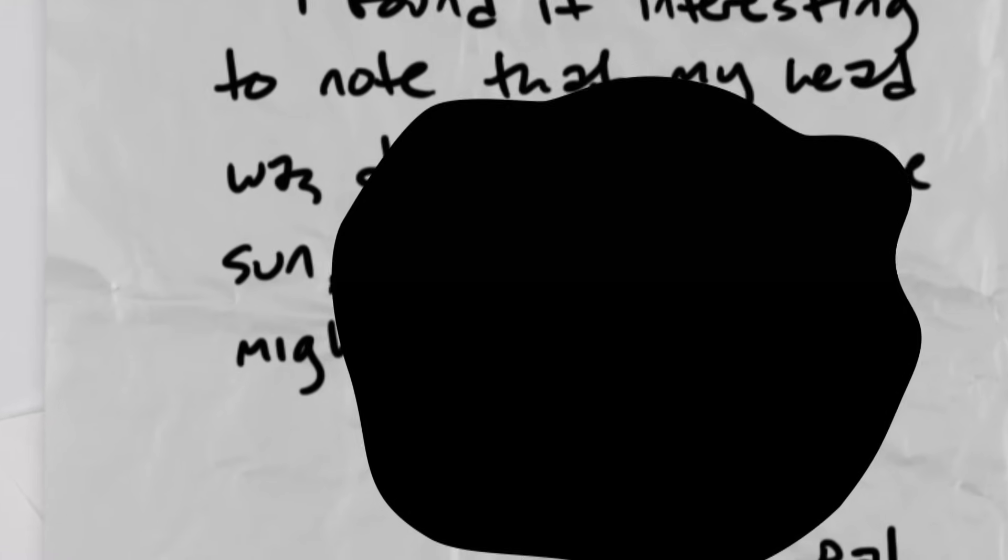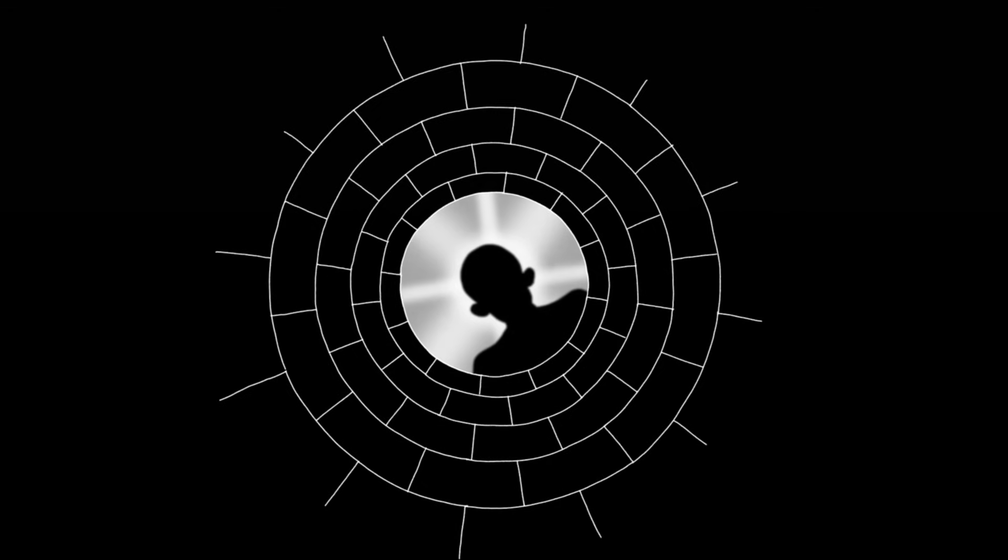The letter included this fact that stuck in Eratosthenes' mind. And the fact was that the writer said at noon, on the solstice, when he looked down this deep well, he could see his reflection at the bottom, and he could also see that his head was blocking the sun.